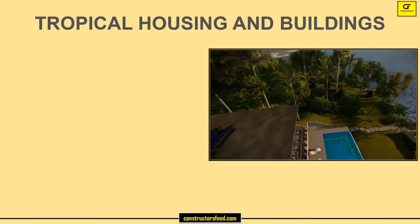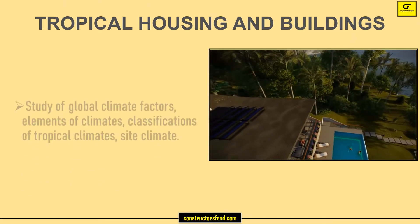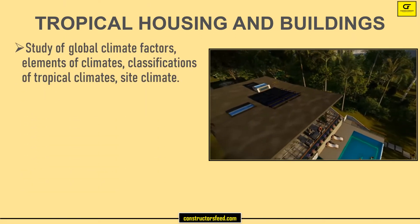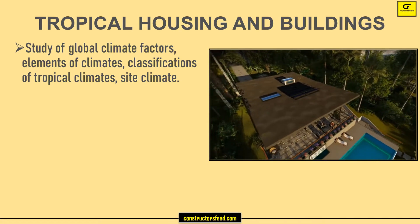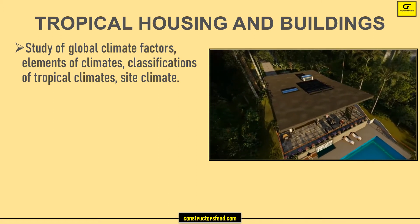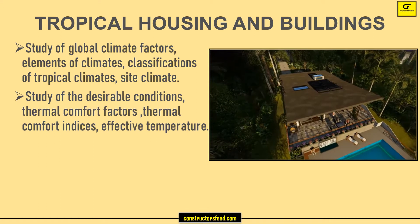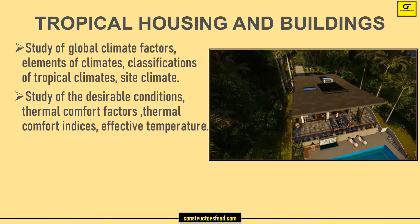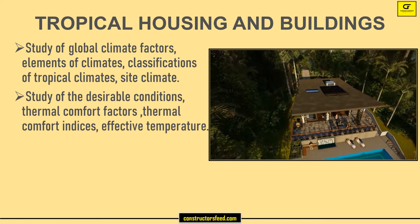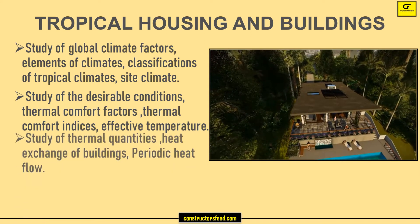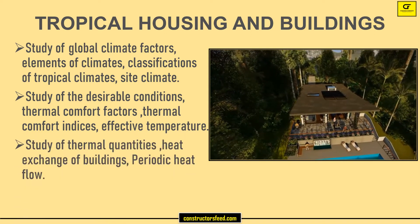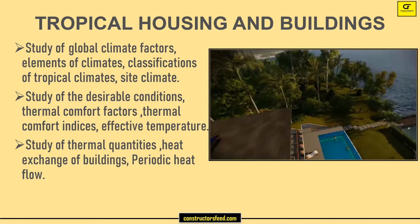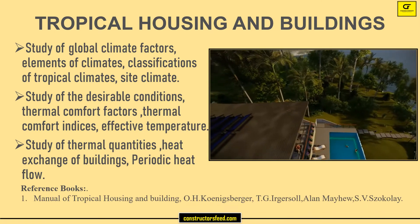Tropical Housing and Buildings covers Study of Global Climate Factors, Elements of Climates, Classifications of Tropical Climates, and Site Climate. It also includes Study of Desirable Conditions, Thermal Comfort Factors, Thermal Comfort Indices, and Effective Temperature, as well as Study of Thermal Quantities, Heat Exchange of Buildings, and Periodic Heat Flow.